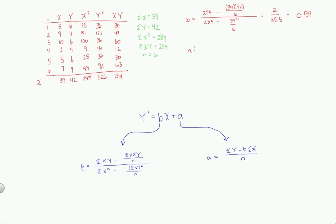a equals, again, sigma y. Don't need sigma y squared, but we do need sigma y. That's going to be 42 minus, here's why we need b, 0.59, which is b times sigma x 39. And that's going to be over n once more, which is six.